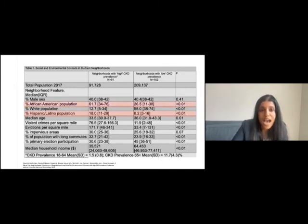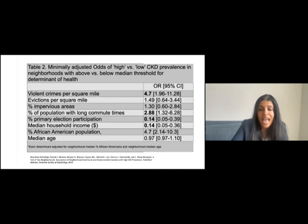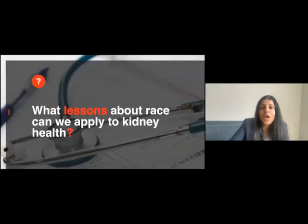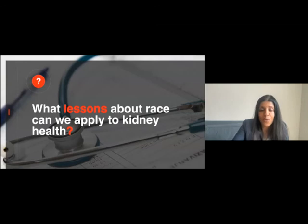Neighborhoods with higher CKD prevalence have a disproportionately higher percentage of Hispanic and African American individuals and more concerning features including poverty—almost half the median household income in high CKD prevalence neighborhoods versus low. In adjusted models, living in a neighborhood with above median household income was associated with lower CKD prevalence.